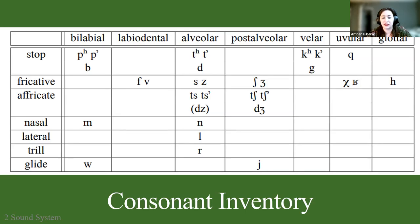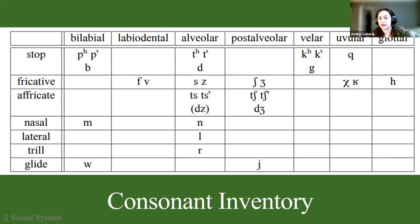The consonant phoneme inventory includes a series of ejective stops, voiced stops, and voiceless aspirated stops. There are fricatives at labiodental, alveolar, post-alveolar, and glottal places of articulation, and a series of affricates including ejective affricates. Z appears in parentheses because it is used in Digor but not in Iron, where z is produced as a different sound. The inventory also includes nasals, a lateral, a trill, and glides w and j.